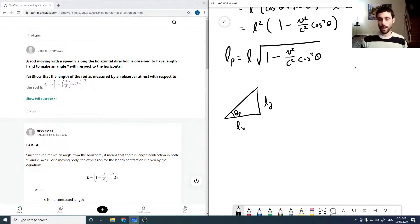So LY isn't being compressed, so we already showed that it's only X that's being compressed. So we've got our LP, this is still L sine theta, and this is now L cos theta root 1 minus V squared over C squared.